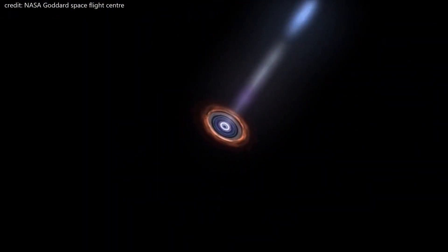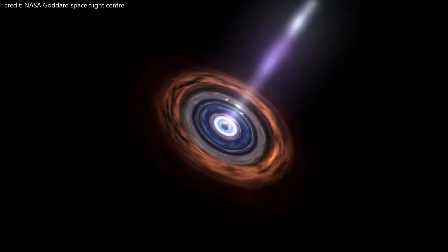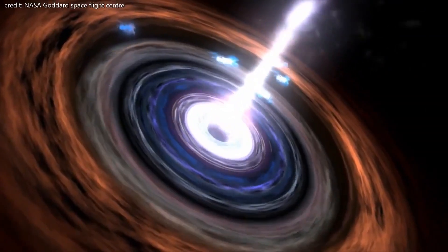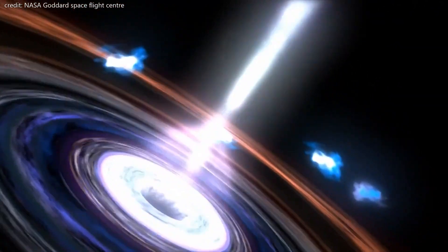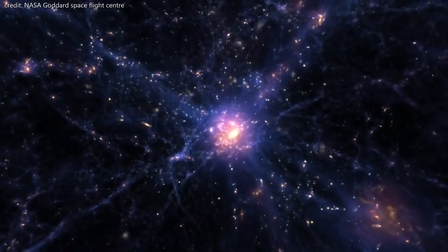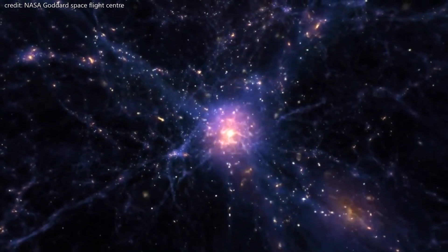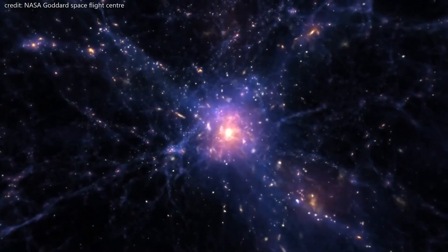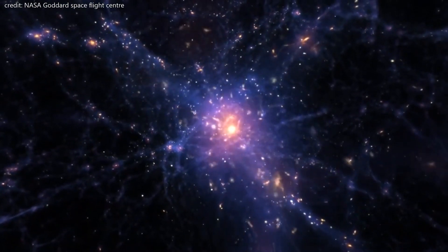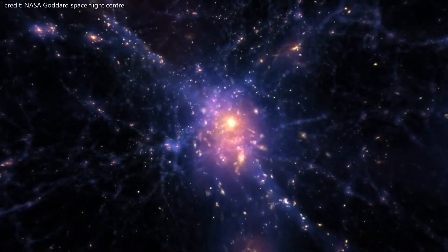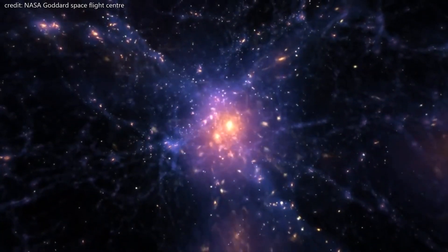A quasar or quasi-stellar radio source is a luminous active galactic nuclei which is powered by a supermassive black hole. Quasars are thought to form in regions of the universe where the large-scale density of matter is much higher than average. Quasars can be found only in the galactic nuclei where supermassive black holes are found.